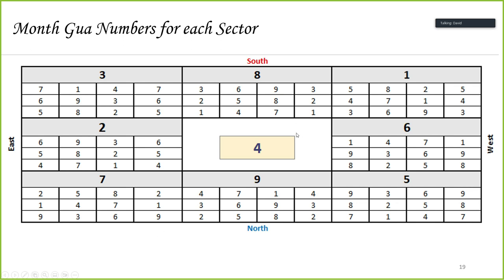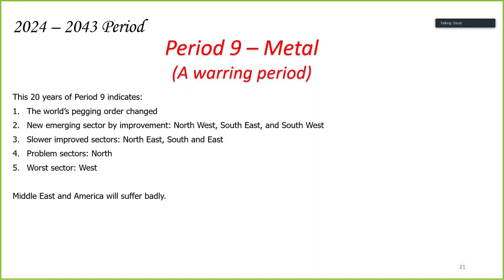As we zoom in on the sector for Malaysia, which is in the southeast quadrant, the southeast quadrant represents quad number three, together with the following period. As we look into period number nine — a metal period, a warring period — we do expect the sectors to change. But somehow this period tends to be favorable to the southeast. Malaysia is part of the southeast region, so we find ourselves in a favorable position.